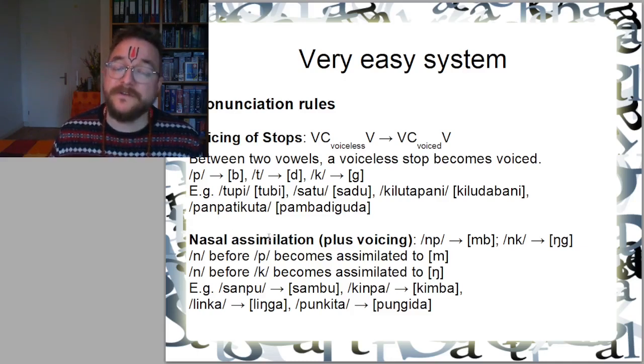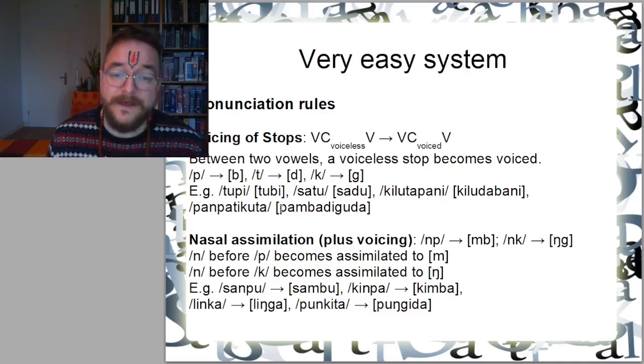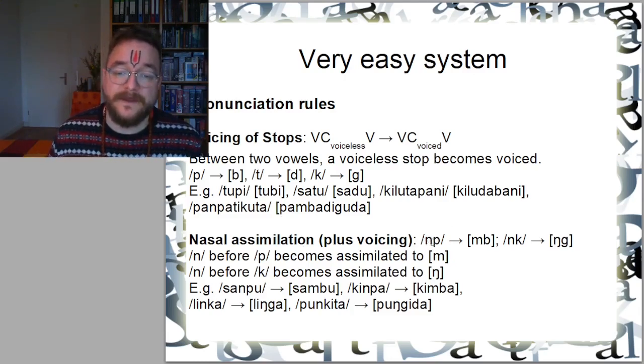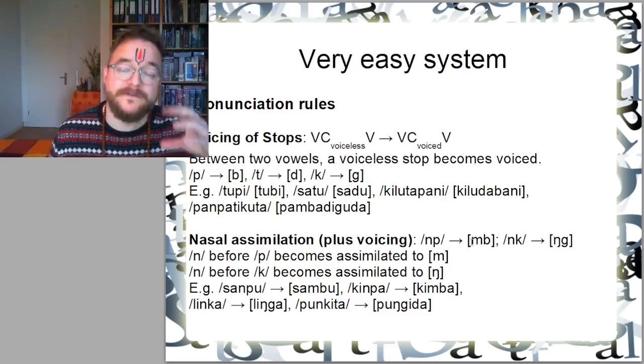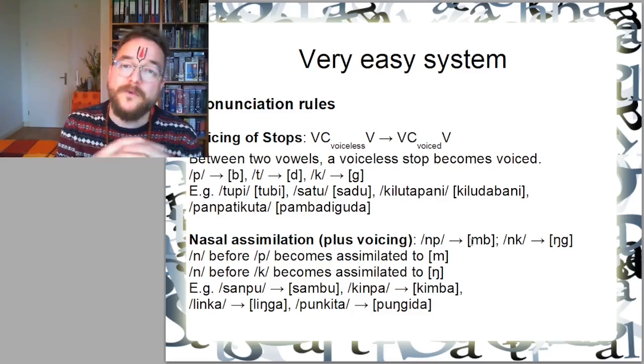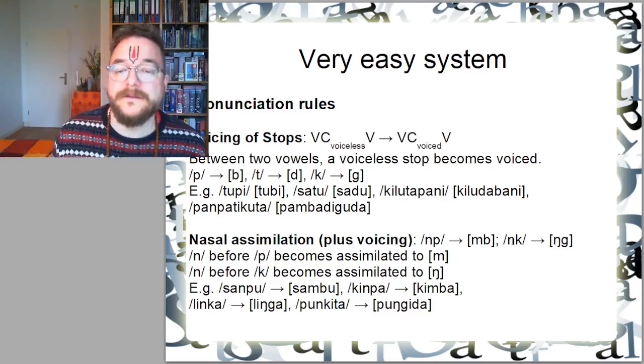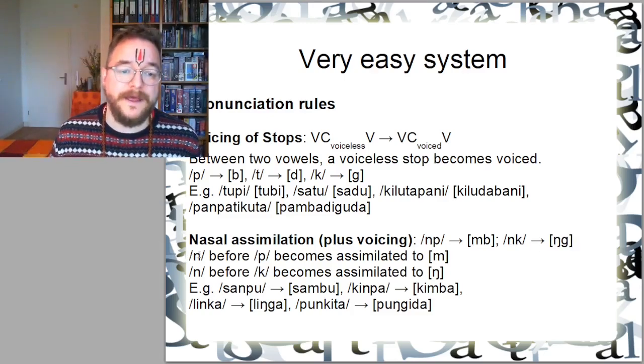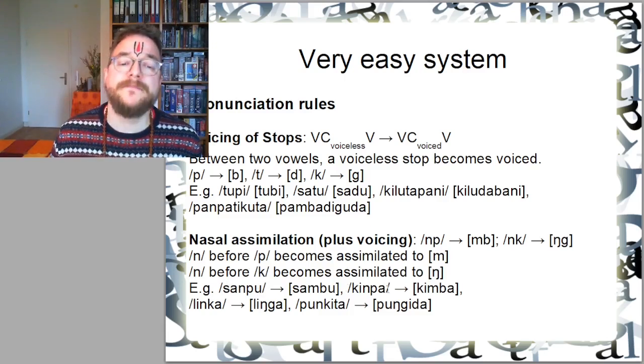Nasal assimilation is a thing that appears in many languages. It means that if an N sound appears before a P or a labial sound, the N becomes bilabial, becoming more similar to each other. And NK becomes NG. So N before P becomes assimilated to M, and N before K becomes assimilated to NG. Examples would be Sanpu becomes Sambu, Kinpa becomes Kimba, Linka becomes Linga, and Punkita becomes Pungida.